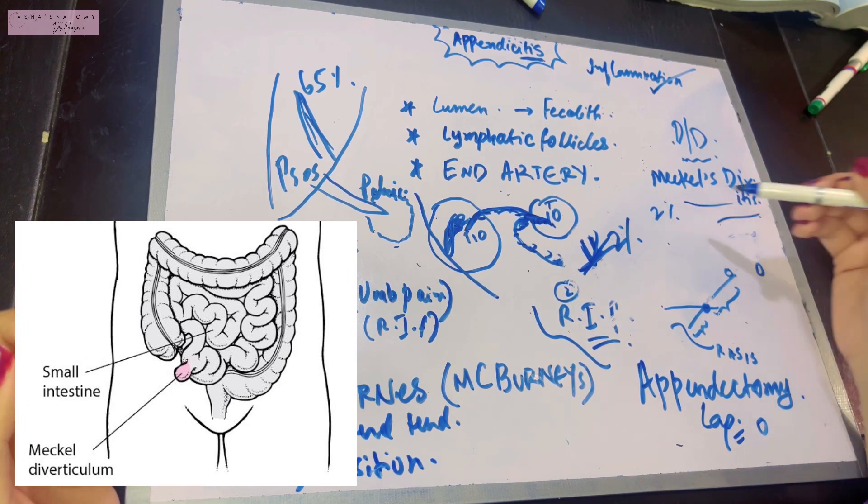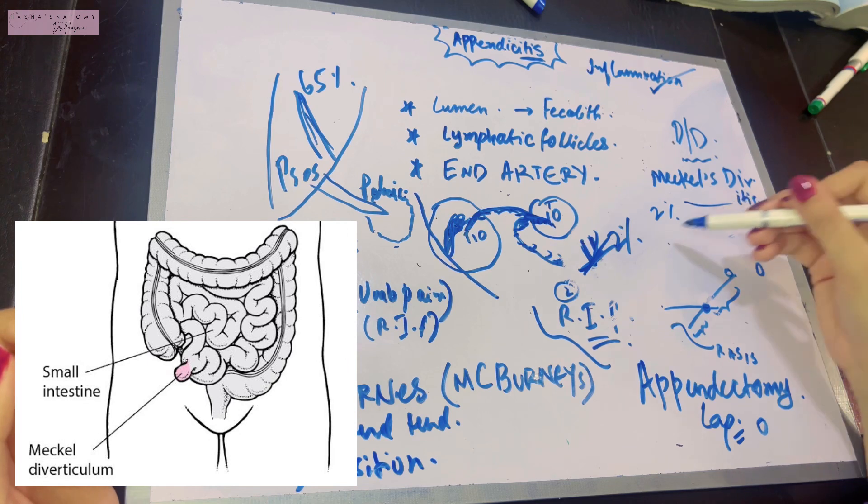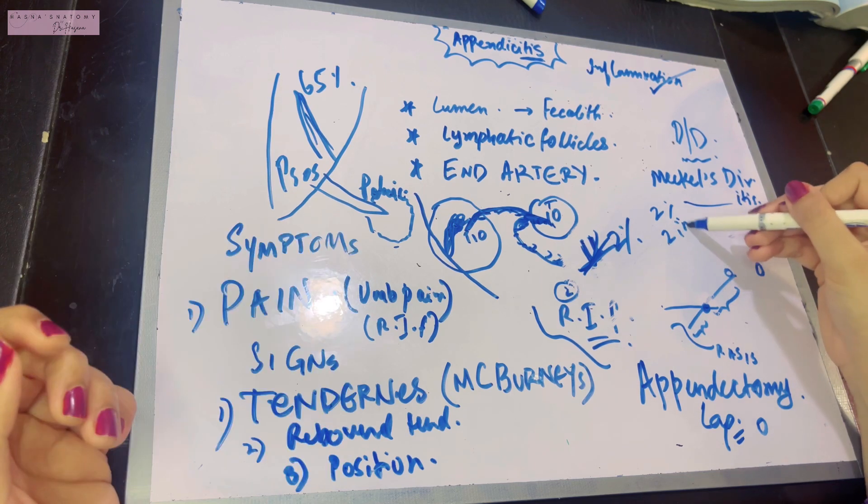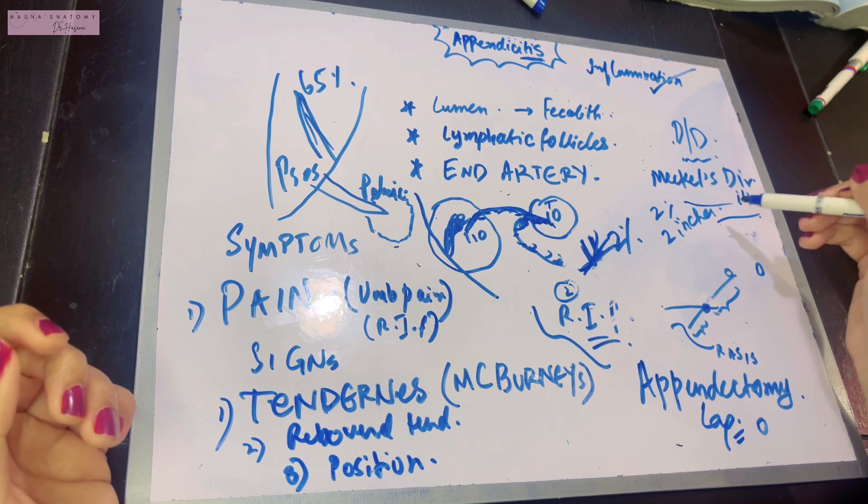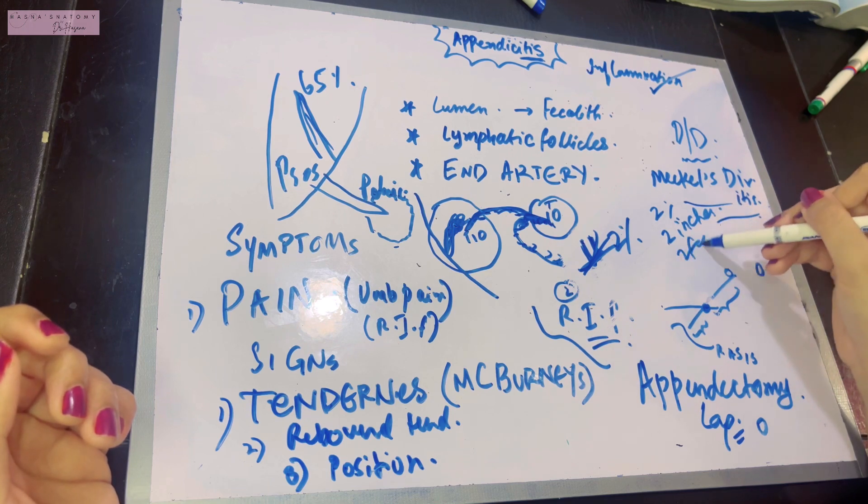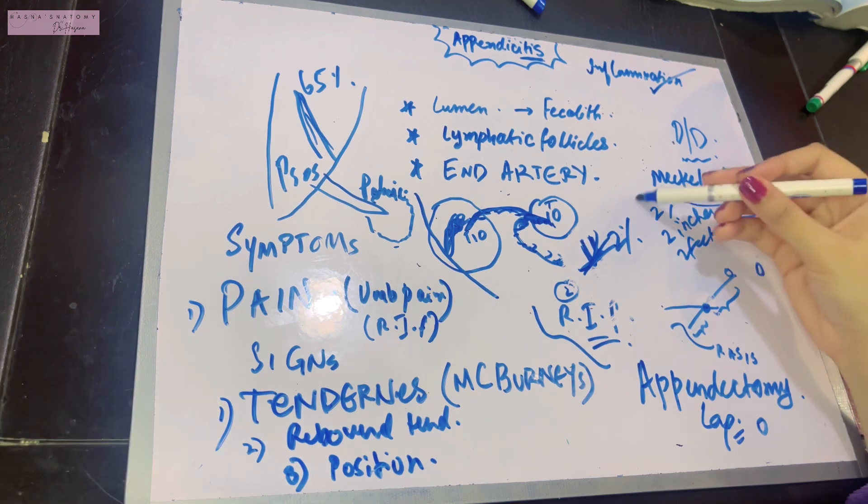A very important feature of Meckel's diverticulum is that it occurs in two percent of the population, is about two inches in size, and is situated two feet proximal to the ileocecal junction. This is the 2-2 rule of Meckel's diverticulitis.